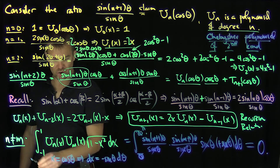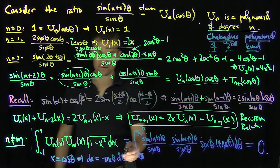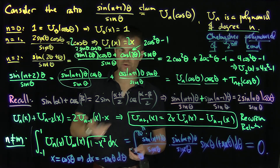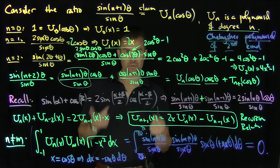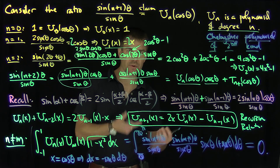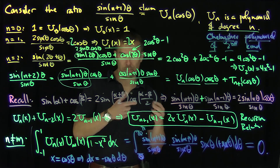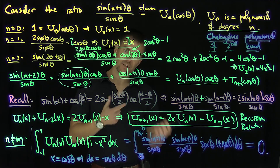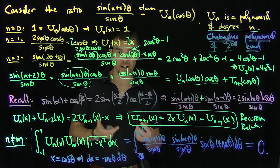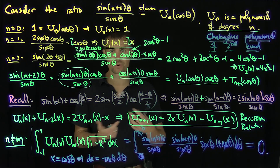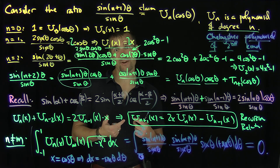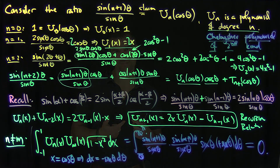We can use this relationship to derive a differential equation for these Chebyshev polynomials, or use the recursion to generate functional relationships. There are many other approaches to understanding Chebyshev polynomials of the second kind and their relation to Chebyshev polynomials of the first kind. Thank you very much.